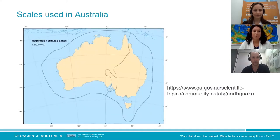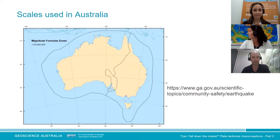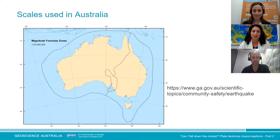A modified Richter scale is used here in Australia, with a coefficient added and three different geological zones each having separate equations. If you want to learn more about the work we do on community safety and earthquakes, there is a link on our website.